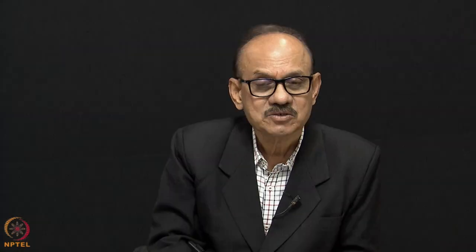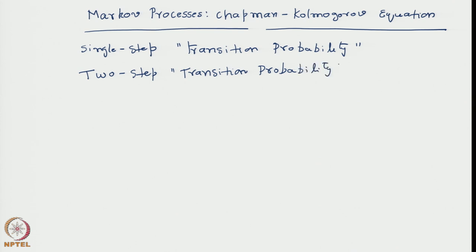First, let us see how to construct a two-step transition probability — a matrix whose elements give a rule for making a transition from today to the day after tomorrow, or from step n to step n+2. This derivation follows from the basic Markovian assumption: the rule for constructing occupancy probabilities from the information available at the previous step.